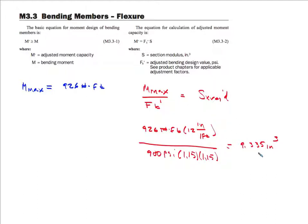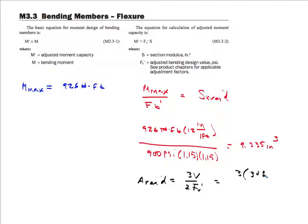Now let's find the required area for shear. Shear is not expected to control, but the required area equation for a rectangular section is A = 3V / (2 × F'v). That's 3 times 308.7 divided by 2 times 180 times 1.15 (duration factor), giving a required area of 2.23 square inches.